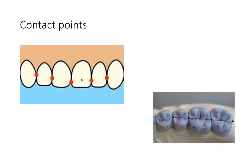When looking at a tooth from a facial-lingual view, the visible axis runs from incisal to gingival. In contrast, from the occlusal view, the axis is buccal-lingual. So we have an incisal-gingival contact point and a buccal-lingual contact point. Each tooth will have a mesial incisal-gingival contact point, a distal incisal-gingival contact point, a mesial buccal-lingual or facial-lingual contact point, and a distal buccal-lingual contact point. Because anterior teeth are much thinner facial-lingually, buccal-lingual contact points are more prominent in posterior teeth.